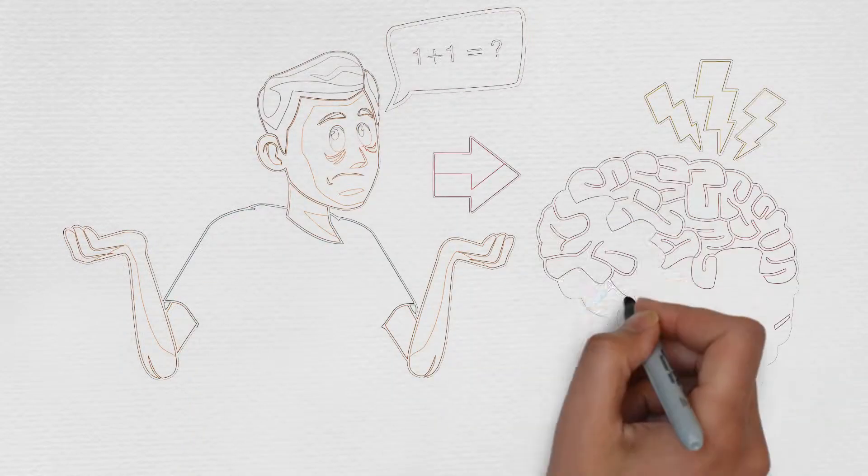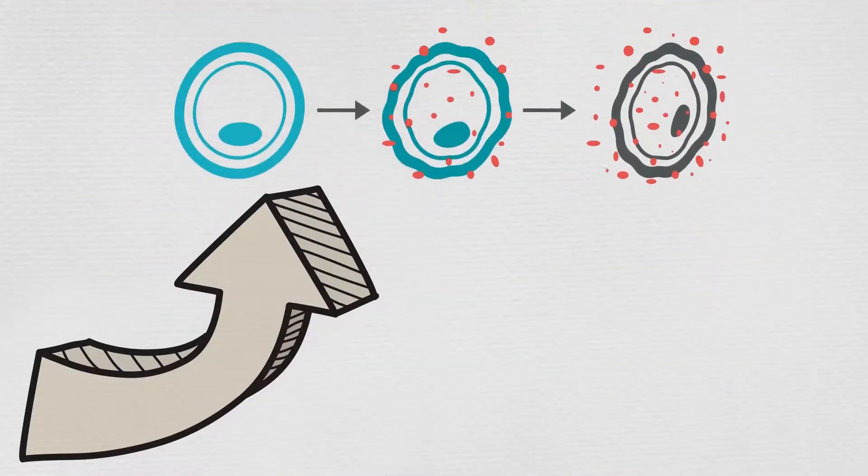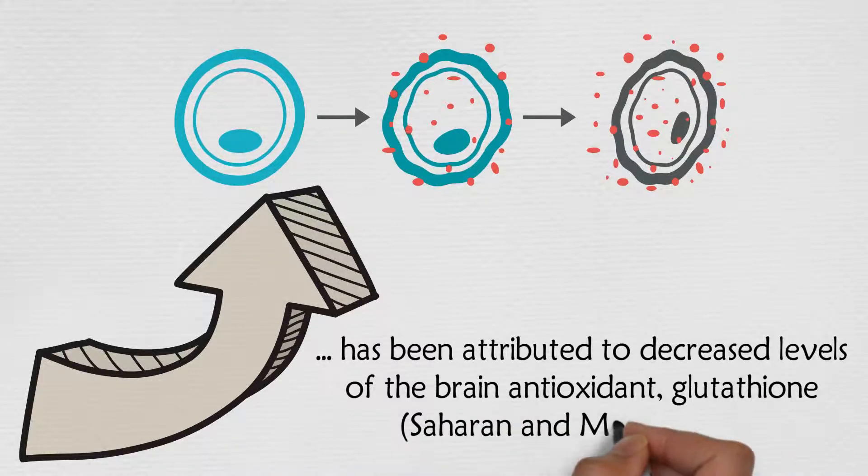One of the emerging causative factors associated with Alzheimer's pathology is oxidative stress. This AD related increase in oxidative stress has been attributed to decreased levels of the brain antioxidant glutathione.